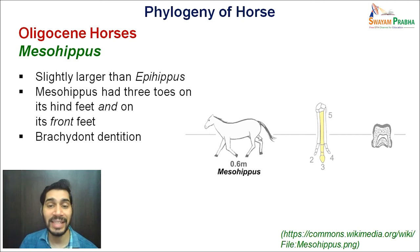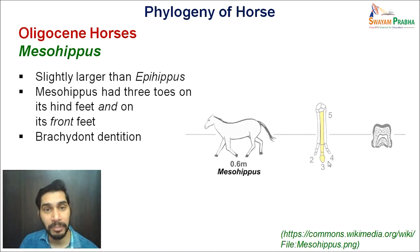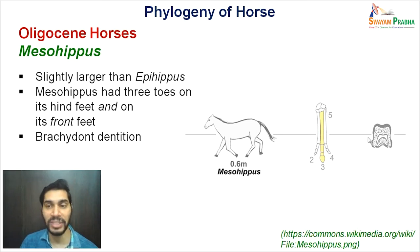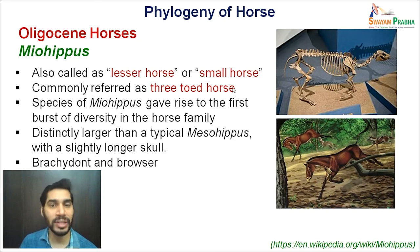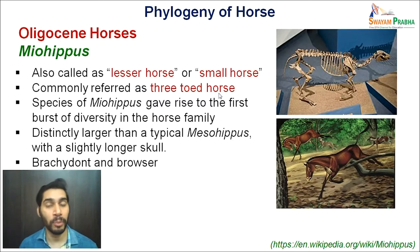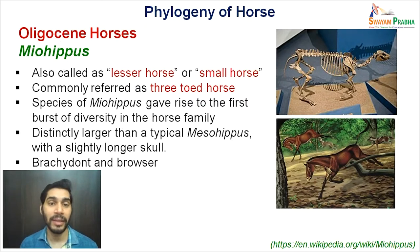Focusing on the limb, there are only three toes — second, third, and fourth — with vestigial portions visible. The teeth show mainly brachydont-type dentition, suitable for browsing. Moving ahead within the Oligocene, the next form is called Miohippus. The word 'mio' refers to less or small, and hence they are called the lesser horse or small horses. They are commonly referred to as the three-toed horse because both forelimbs and hindlimbs had three toes only.